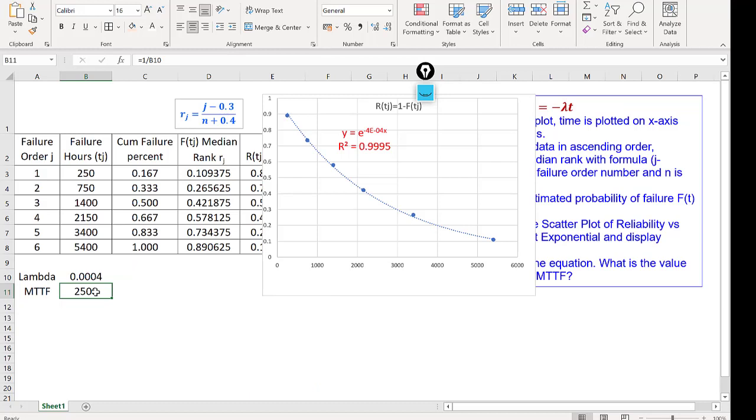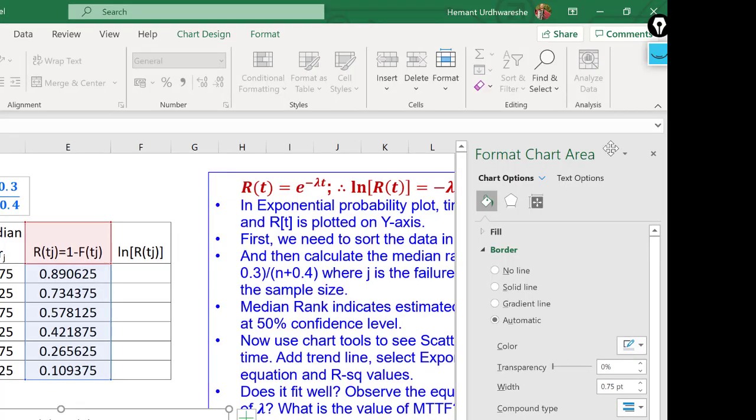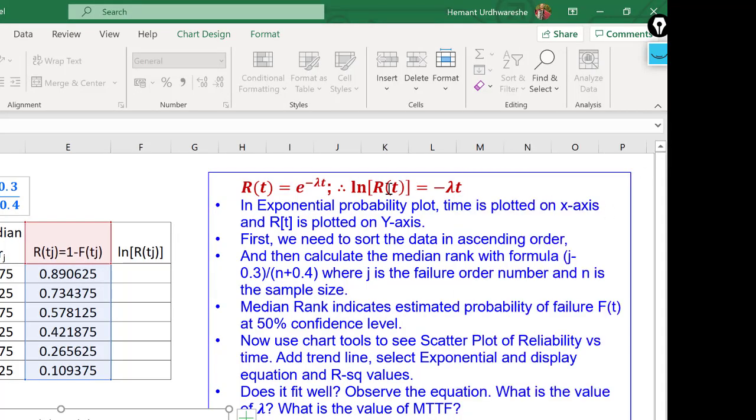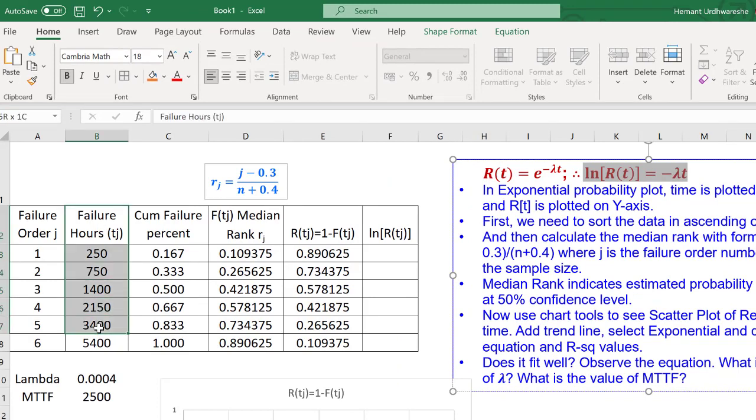Alternately, we could also directly plot the logarithm of reliability. The equation we have seen before. This is the equation. ln of R(t) is equal to minus lambda t. So, we can directly fit a straight line and the slope of that line would give us lambda.